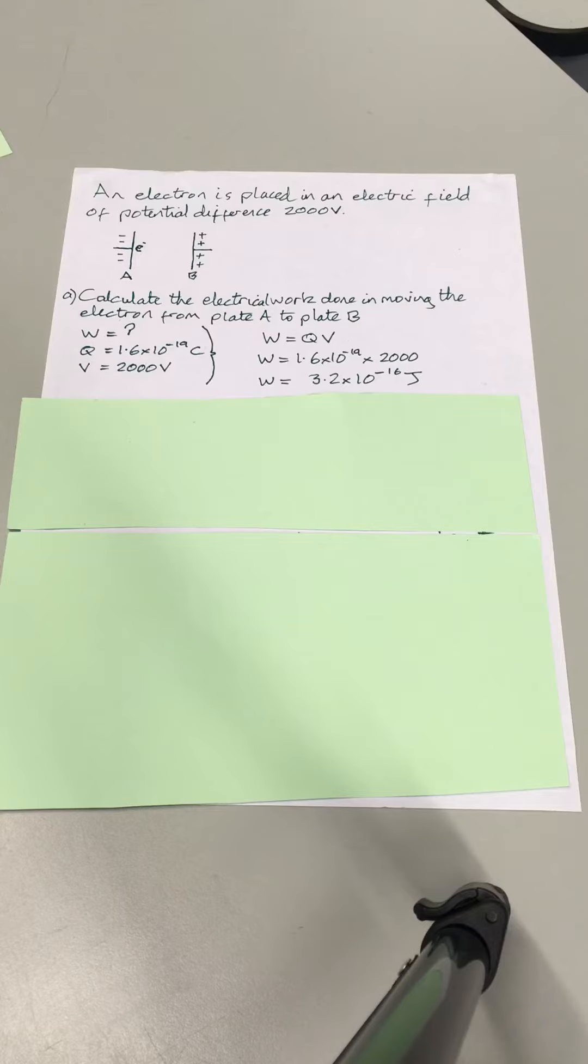Potential difference is 2000 volts. So W equals QV, and as you can see there, 1.6 times 10 to the negative 19 times 2000 equals 3.2 times 10 to the negative 16 joules.